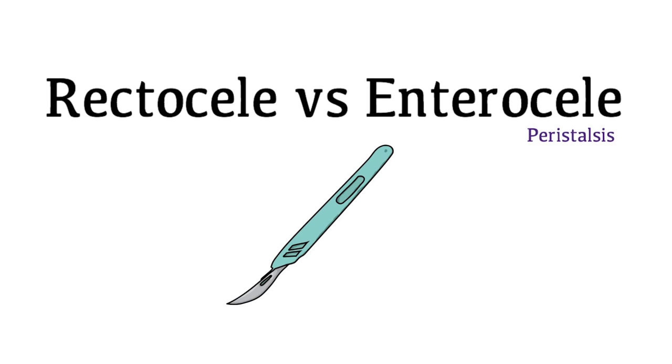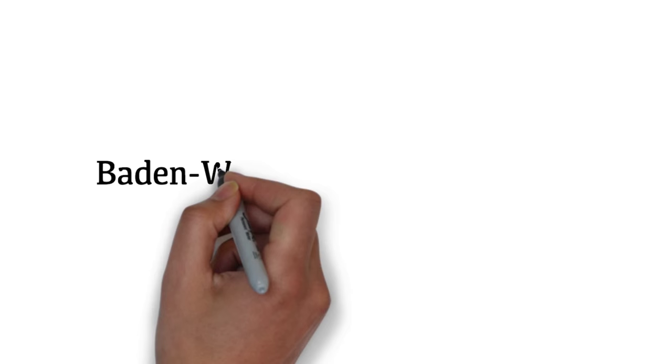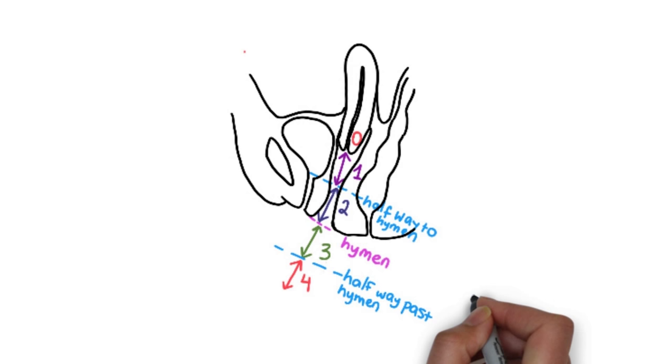You can grade the prolapse using the Baden-Walker halfway system. It is an older system designed in 1968. It measures the most distal portion of prolapse relative to the hymen.